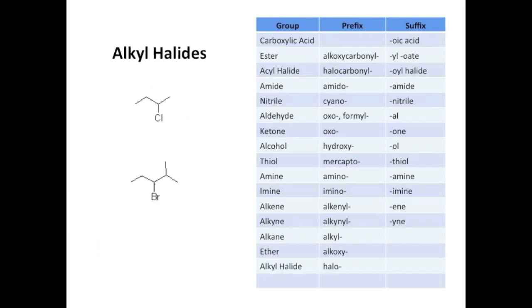On to alkyl halides, which are really easy as well. They take the prefix fluoro-, chloro-, bromo-, or iodo-, depending on which halogen it is. Example 1 is 2-chlorobutane, and example 2 is 3-bromo-2-methylpentane.